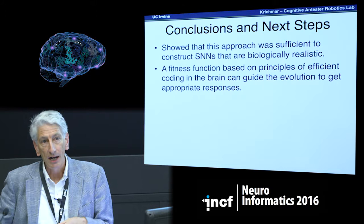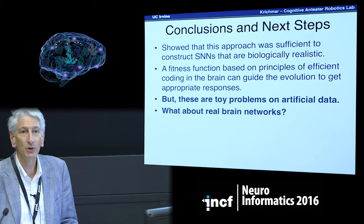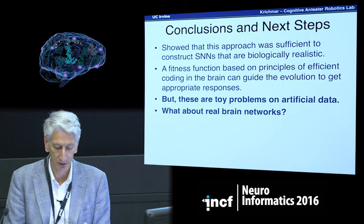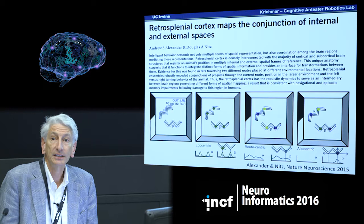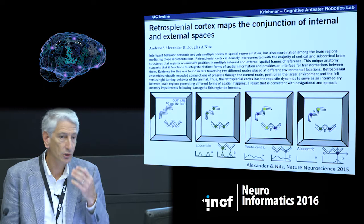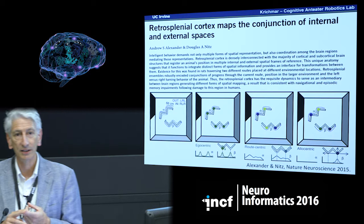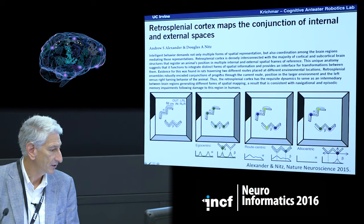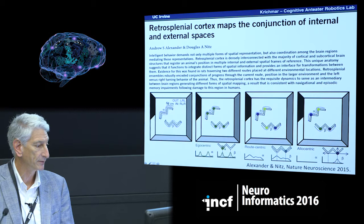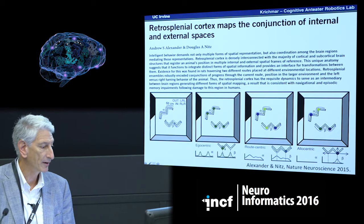These are toy problems, so what about real brain networks? We're very lucky to have data from Doug Nitz's lab at UC San Diego. He was recording from an area of the brain called the retrosplenial cortex, which is interesting because it has three types of spatial navigation encoding. The task was having a rat run a W maze back and forth, then moving the maze to a different position and having the rat run the W again.